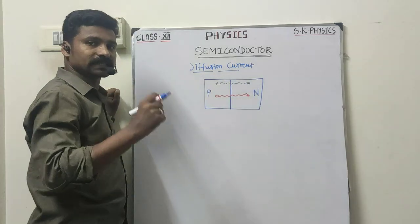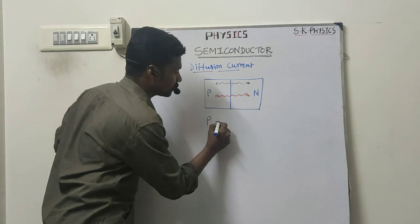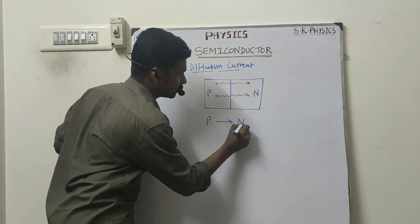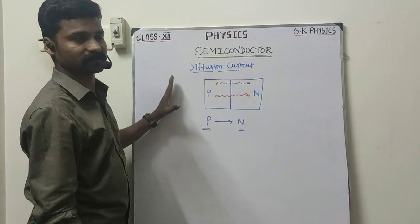Then this diffusion current direction is always from p-region to n-region, p-side to n-side. This is diffusion current. Thank you.